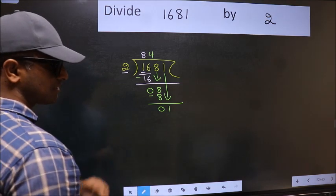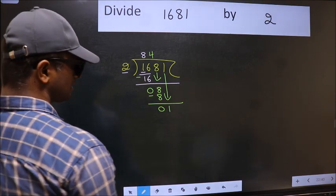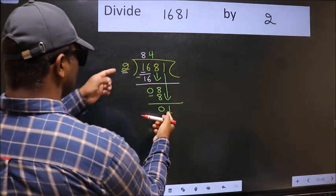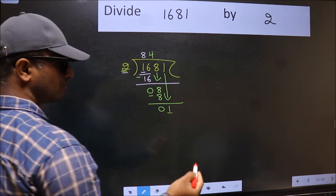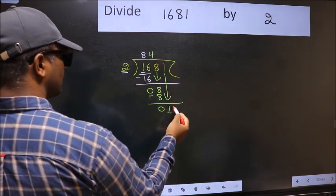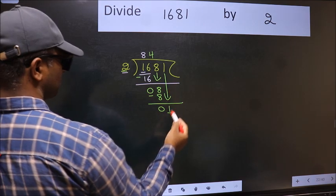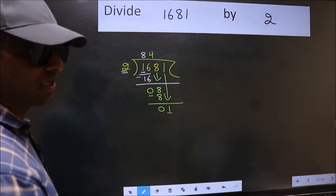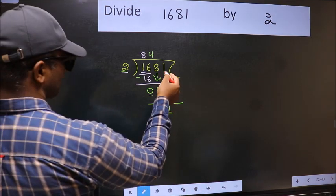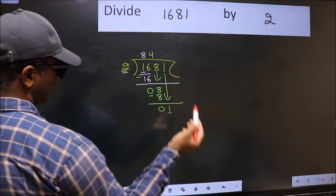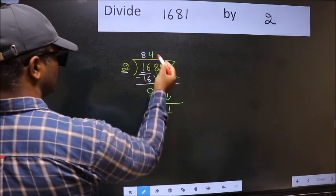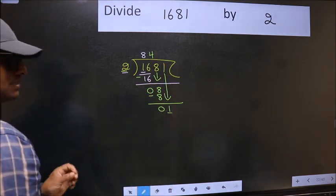After this step, the mistake happens. And the mistake is this: here we have 1 and here 2. 1 is smaller than 2. So what many do is they directly put dot, take 0, which is wrong. Why is it wrong? Because just now you brought this number down, and in the same step you want to put dot, take 0, which is wrong.